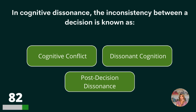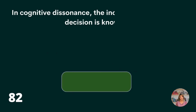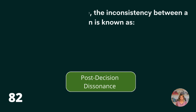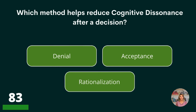In cognitive dissonance, the inconsistency between a decision is known as cognitive conflict, dissonant cognition, or post-decision dissonance? Post-decision dissonance.